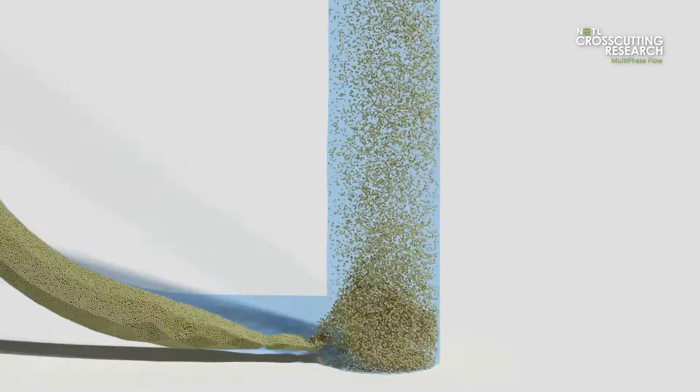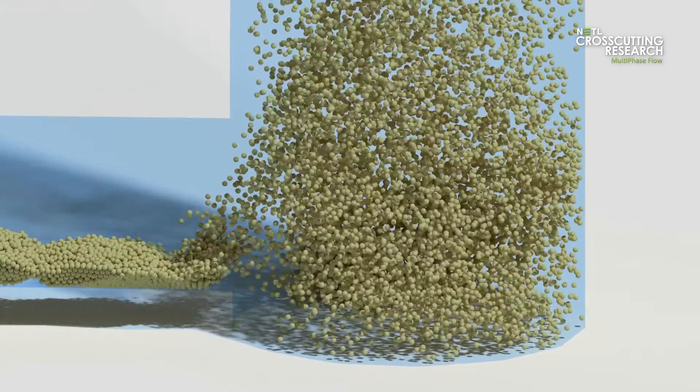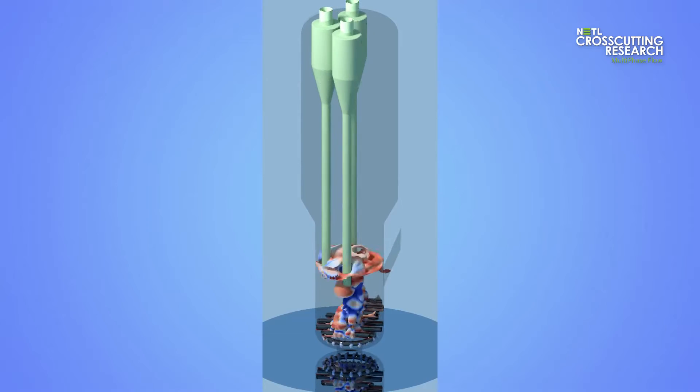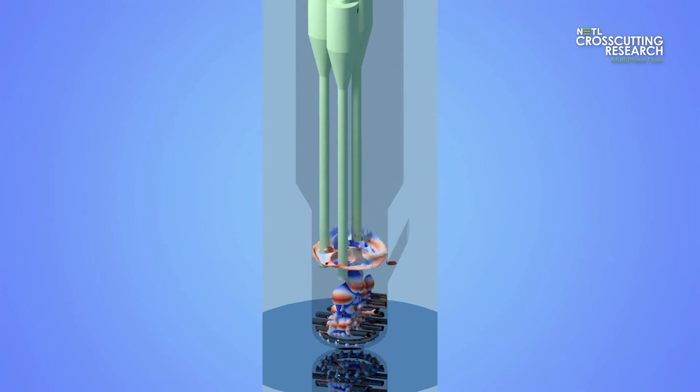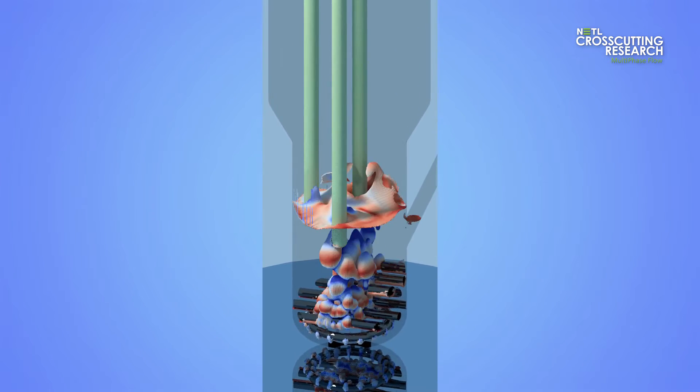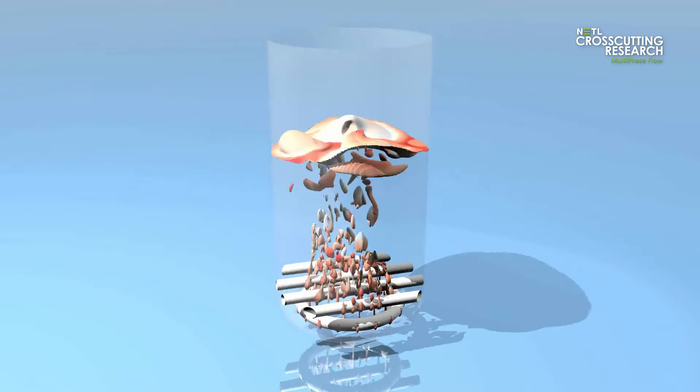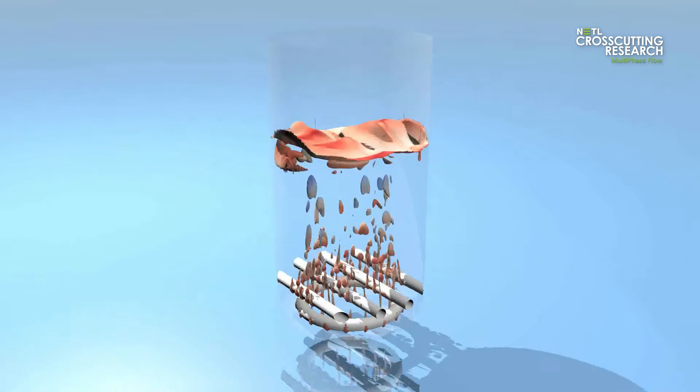Multiphase flow refers to the simultaneous flow of gases, liquids, and or other solid materials. For example, in fossil fuel combustion, solids like coal particles react with gases in a wide range of flow conditions, from dilute pulverized coal combustors to dense fluid bed boilers.